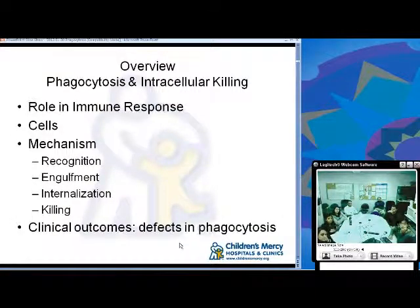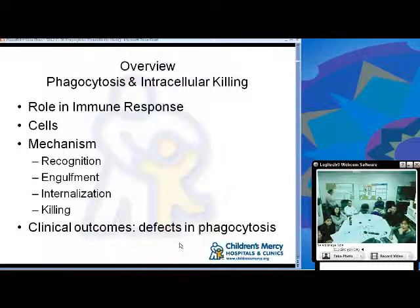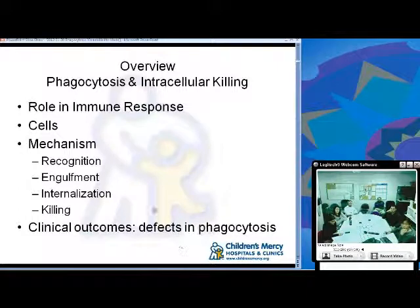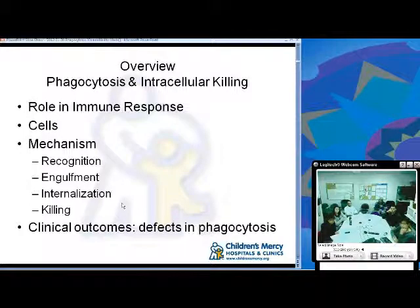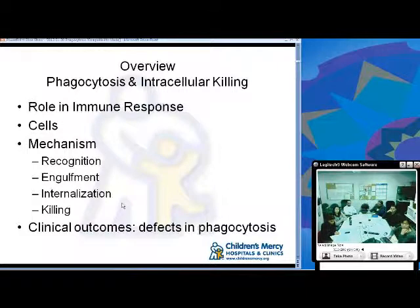Today I'm going to talk about phagocytosis and intracellular killing, its role in the immune response, the cells that are involved, and the mechanism of phagocytosis and subsequent killing. There are four basic steps: recognition, engulfment, internalization, and then killing. We'll also discuss clinical outcomes of defects in cells that have a role in phagocytosis.